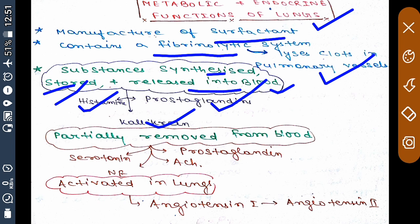Some substances which the lungs remove from the blood are serotonin, norepinephrine, acetylcholine, and prostaglandin. So prostaglandins are both synthesized and removed from the blood by the lungs.